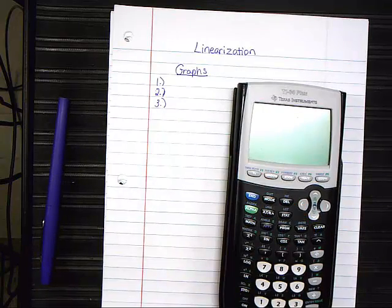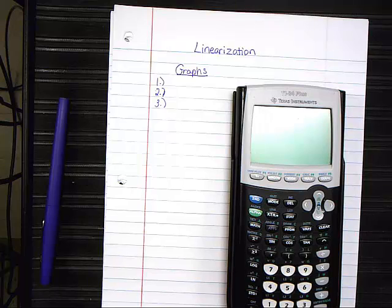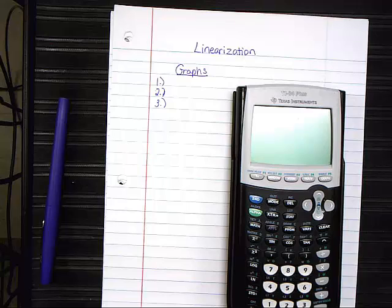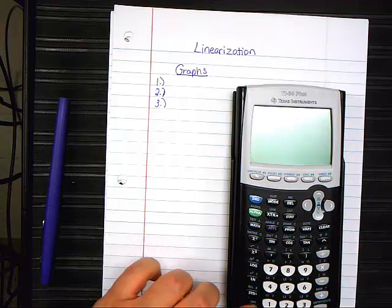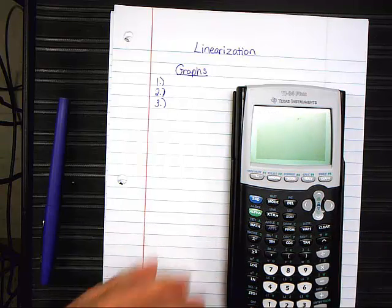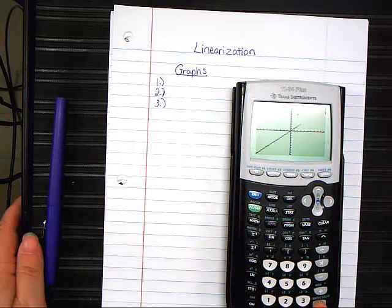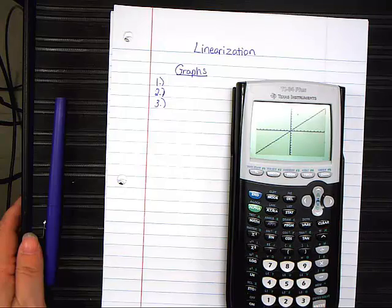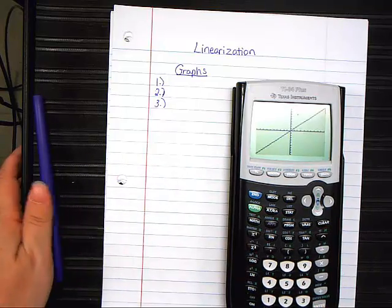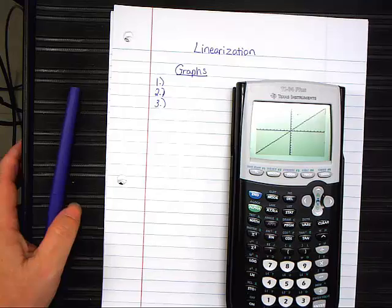I'm going to put my calculator up here on the screen so you can see it. I'm going to make a graph up here on the screen, and I want you to write the equation of that graph for me. Let me turn it on. Here comes the first graph. Just write it down. Don't talk about it.